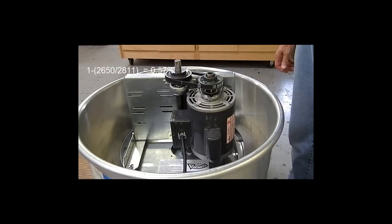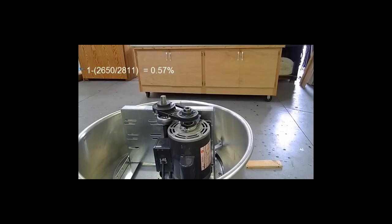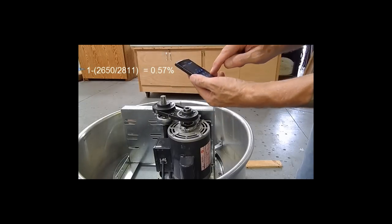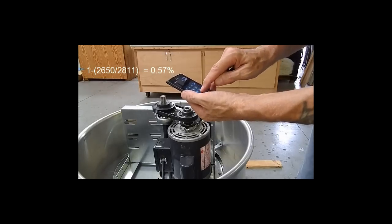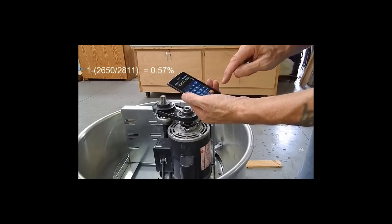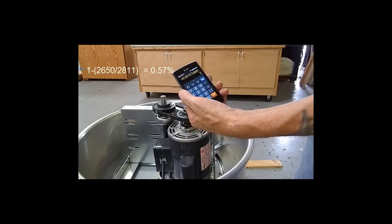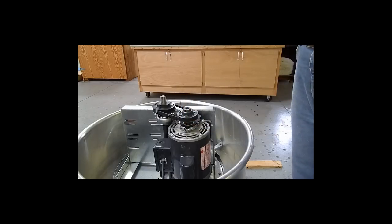The calculation we use is 1 minus 2,650 divided by 2,811 which will give us 0.057% or 1 full turn open which is 5%. On a calculator it looks like this. This should give us approximately 1,414 RPM or 2,670 CFM.